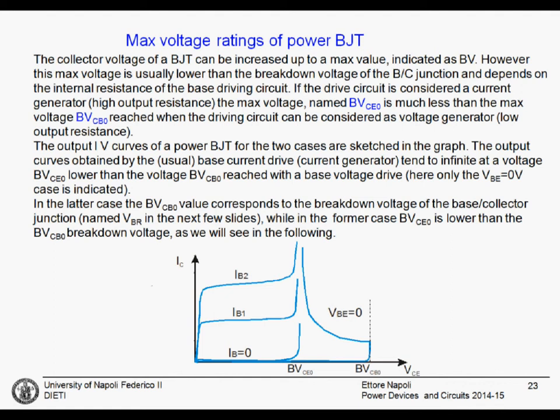We will see why in a while. The actual breakdown voltage that we measure depends on the internal resistance of the base driving circuit. We can consider two extreme cases. If the driving circuit is seen as a current generator with a very high output resistance, the maximum voltage is named BVCE0. This voltage will be much lower than the maximum voltage BVCB0 that we can obtain when the driving circuit can be considered as a voltage generator with a low output resistance.